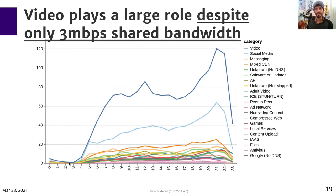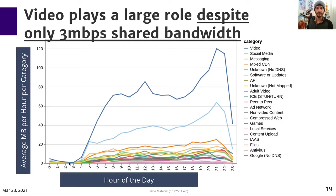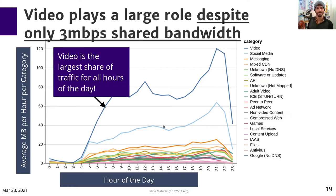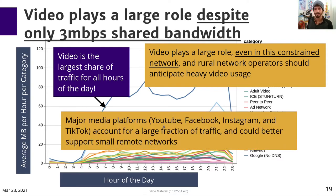Also in this network, we categorized the different flows. This chart shows for each hour of the day on average the number of megabytes for each category of flow. Categories include video in the blue line, social media in the light blue line, and many other categories that are all dominated by video and social media. Video is the largest share of traffic for all hours of the day, and we were really surprised that video plays a large role even in this constrained network — remember, it only has 3 megabits of shared bandwidth. Rural operators need to anticipate heavy video usage on the modern web even with low-bandwidth networks. Most of this video is coming from a few major platforms: YouTube, Facebook, Instagram, and TikTok accounted for almost all of it, and these big services could better support small remote networks.